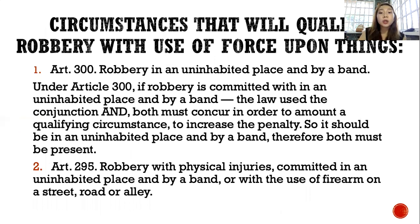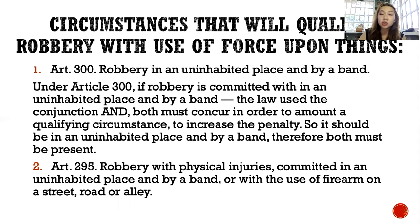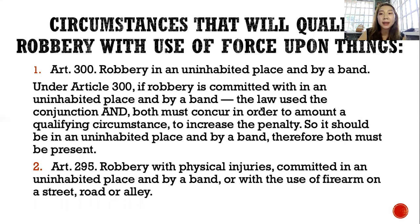What circumstances qualify robbery with the use of force upon things? Under Article 300, robbery in an inhabited place and by a band — note that the conjunction used by the law is 'and,' so both must be present. It is necessary that it is in an inhabited place AND by a band — both must concur in order to amount to a qualifying circumstance to increase the penalty.